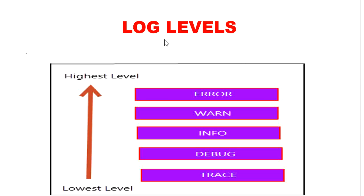These are the log levels: error, warn, info, debug, and trace — five levels. The default logging level of the logger is preset to info, warn, and error. Meaning that if we want to enable trace and debug logging levels, then we need to do some configuration in our property file.